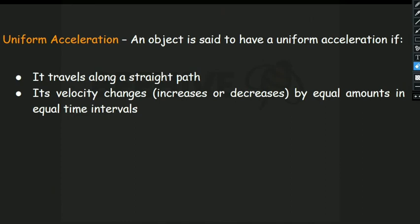Uniform acceleration: a body is said to have uniform acceleration when two conditions are met. First, it travels in a straight path. Second, the velocity changes by equal amounts in equal intervals of time — that is, velocity changes uniformly with respect to time. If velocity does not change uniformly, it is non-uniform acceleration.